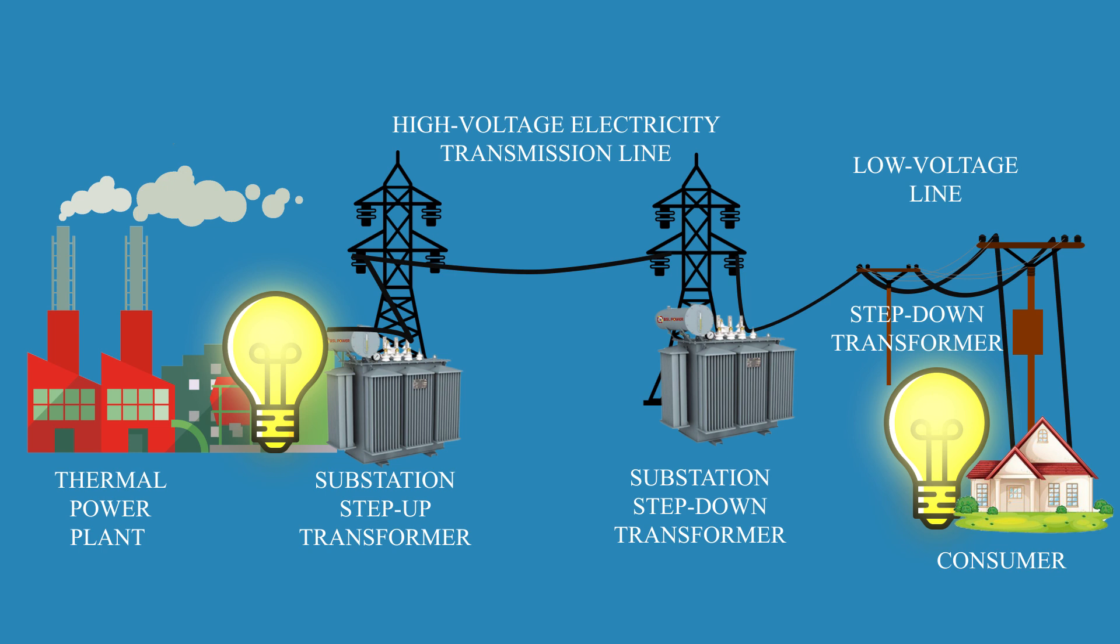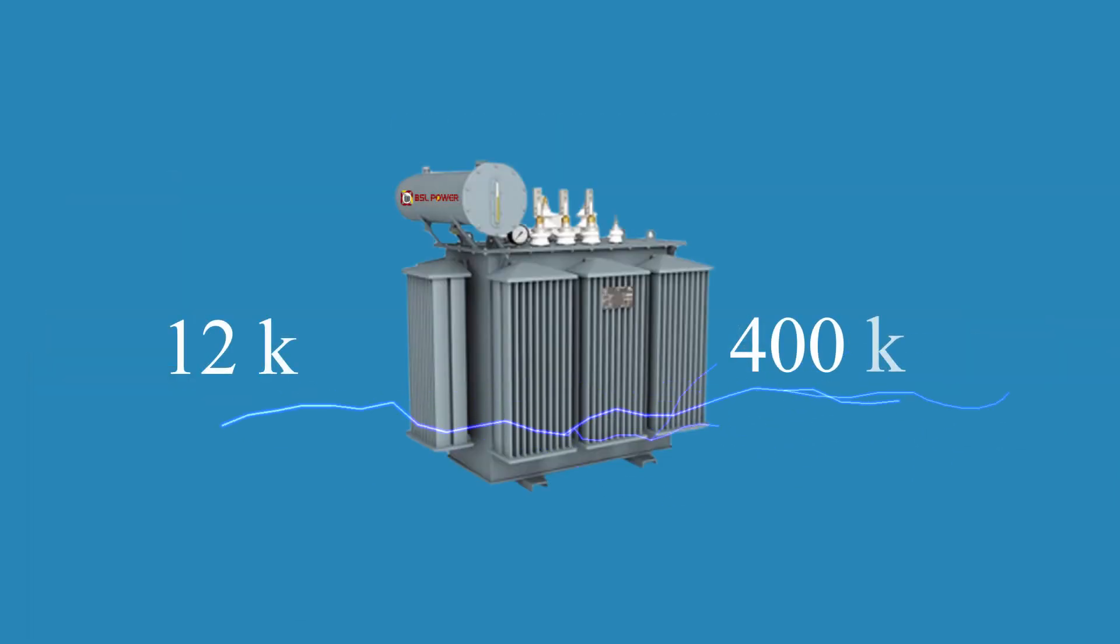However, consumers should not be connected to high voltage lines. Therefore, the voltage must be stepped down at the end of the line. Transformers are used to first step up and then step down the voltage. Thus, a transformer is a device that converts alternating current of one voltage into alternating current of another voltage without changing the frequency.